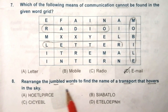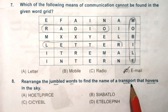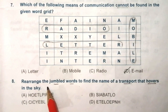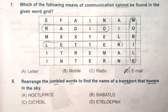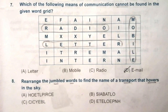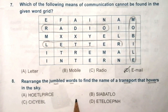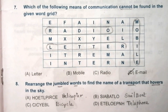Question 8: rearrange the jumbled words to find the name of a transport that hovers in the sky. 'Hovers' means to remain in one place in the sky. Rearrange the jumbled letters, and the answer is A — helicopter.